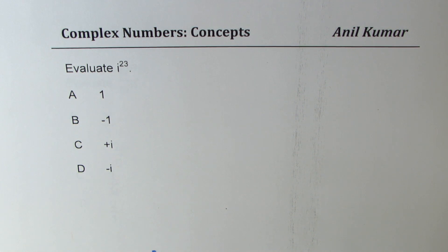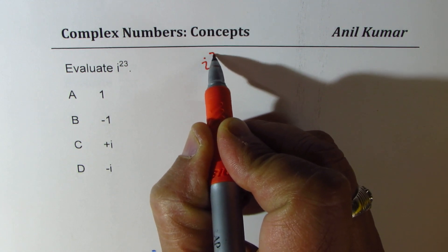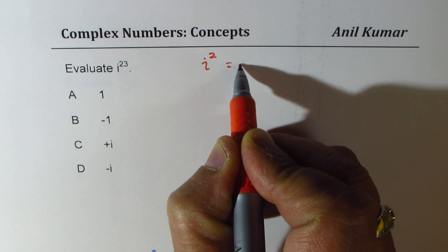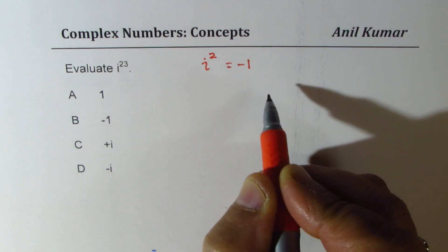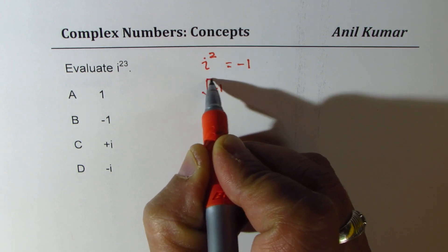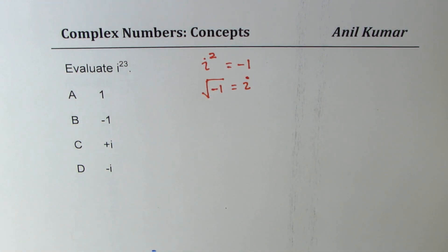We'll begin with a very simple example. I hope you remember that square of i, the complex number, is minus 1, which is to say that square root of minus 1 is same as iota i. That's the imaginary part.